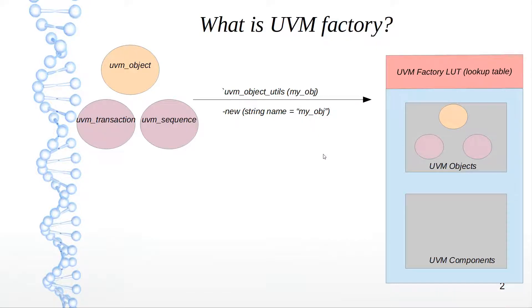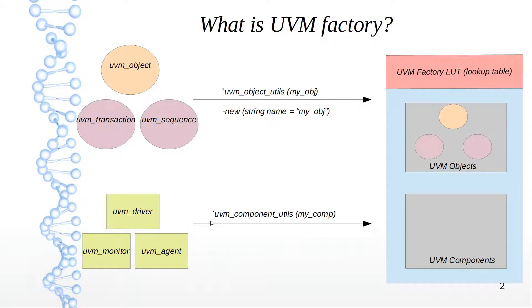If you have UVM components, you need a different macro to register them in the lookup table. That macro is `uvm_component_utils`. The argument — for example `my_driver` or `my_monitor` or `my_agent` — corresponds to whatever class you have declared. Adding this macro right after declaring your class ensures that your components get registered in the factory.